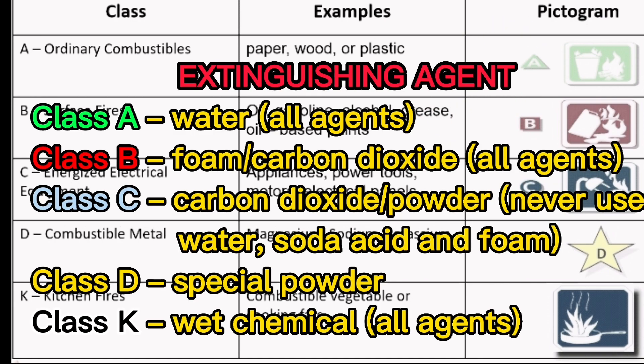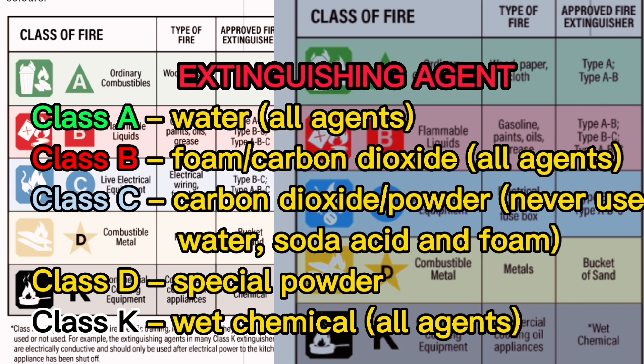Fire extinguishment — extinguishing agents by class: Class A — water or oil agents. Class B — foam, carbon dioxide, or oil agents. Class C — carbon dioxide or powder; never use water, soda acid, or foam. Class D — special powder. Class K — wet chemical or oil agents.